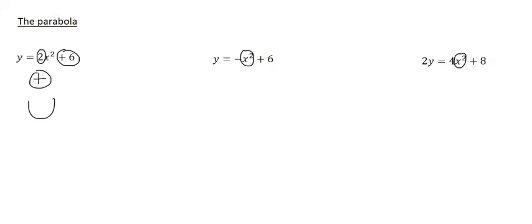And then what does this plus 6 do to the graph? Well, it moves it 6 places upwards. And so that graph would look something like this. I'm just doing a rough sketch. It would be happy, and it would be moved 6 places up.